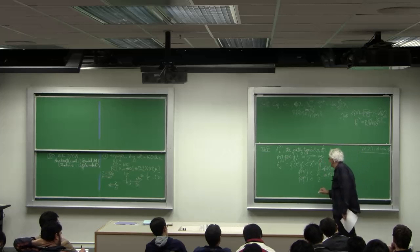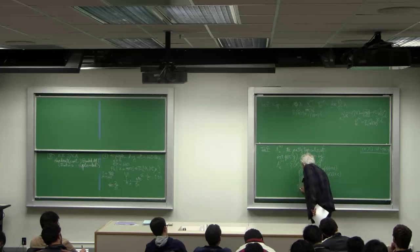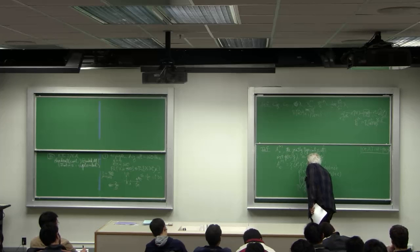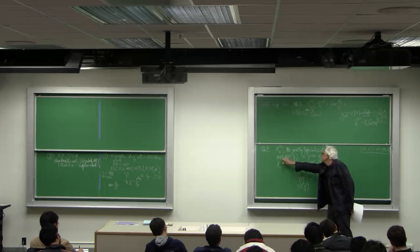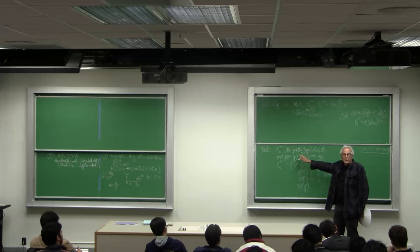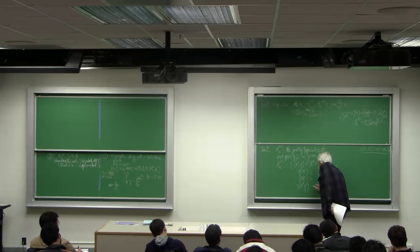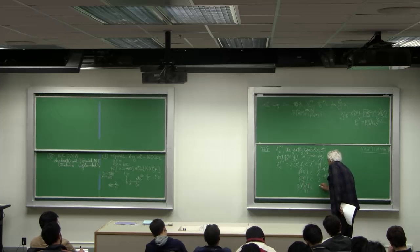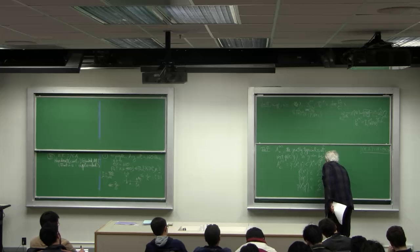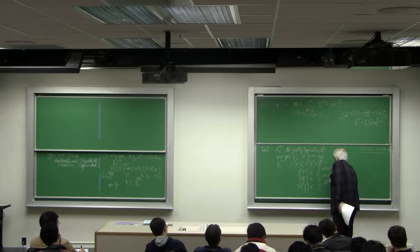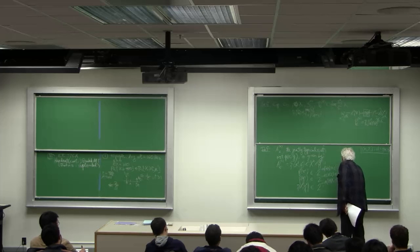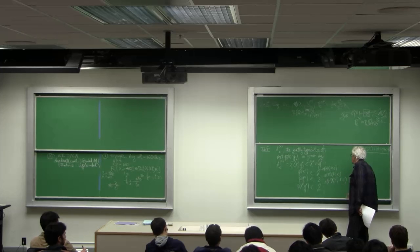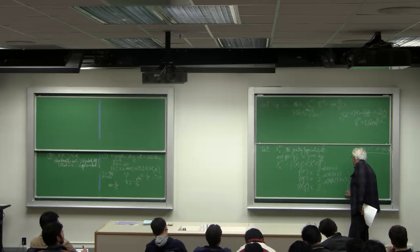And the key is you want the joint distribution to be the joint distribution that you define the typicality with respect to. So you want the probability mass on this pair of sequences to be 2 to the minus n h of x comma y plus or minus epsilon. Close curly brackets.